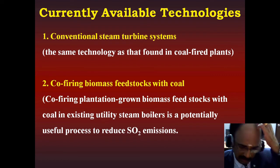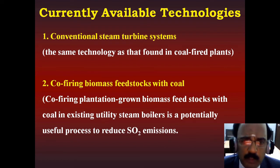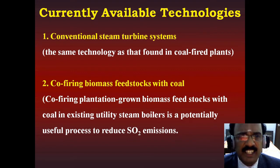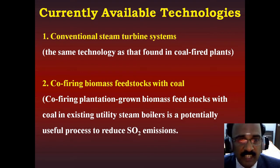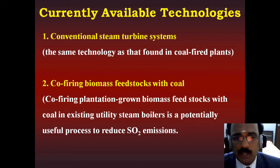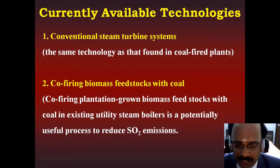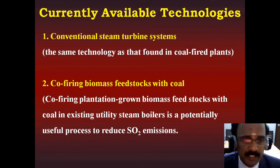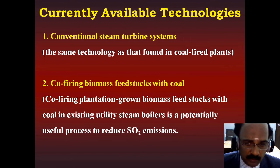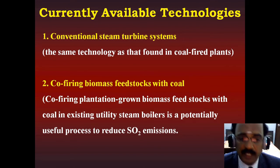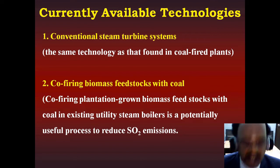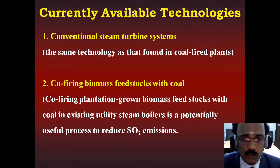We worked out the surplus biomass available from various sources in different talukas of Tamil Nadu and calculated how much power can be generated in megawatts from various sources of biomass available from agro and wood and agro-industrial waste. To summarize: we have discussed wood generation through energy plantation, available agricultural residues, and available agro-industrial waste — all potential sources of biomass for power generation.